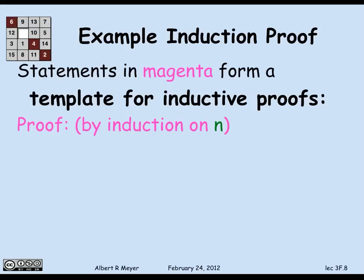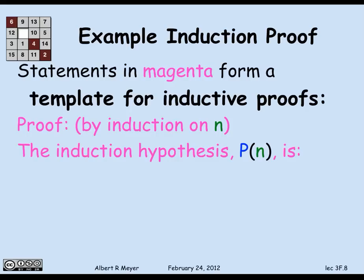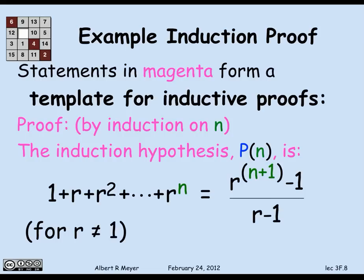The template, shown in magenta, is just an organizational method — no math, just structure. The first thing you do is tell your reader you're using proof by induction, so you begin with: 'Proof by induction on n.' Then state the induction hypothesis p of n. In this case, our induction hypothesis is that this equality holds for all non-negative integers n. The objective, implicitly, is to prove for all n, p of n holds.